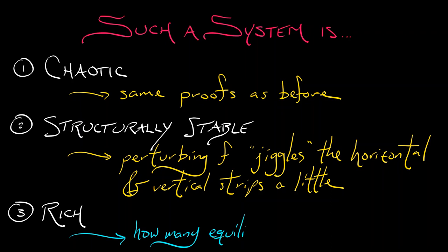How many equilibria does this system have? You can figure that out. How many period five orbits does this have? You can figure that out as well. There's a little bit more going on in this map.